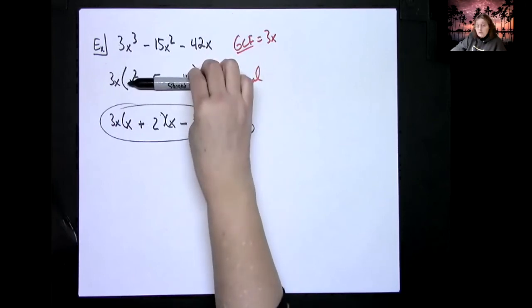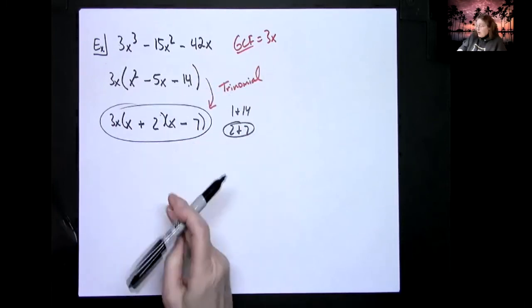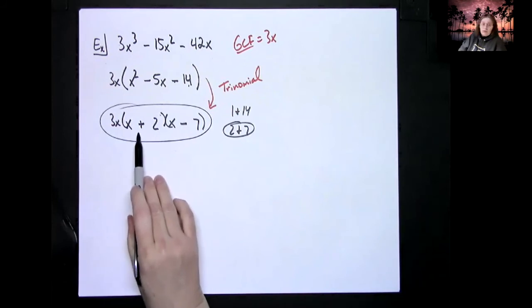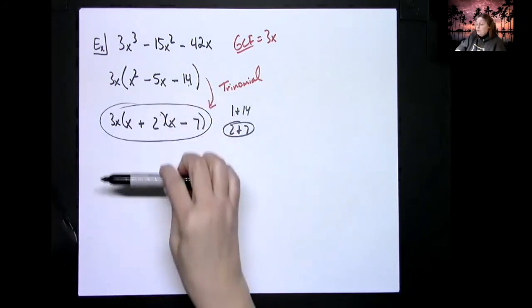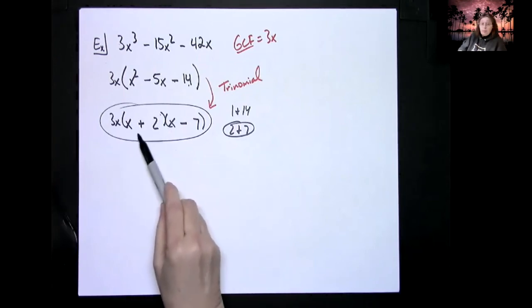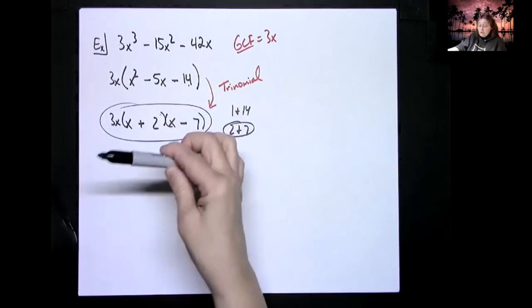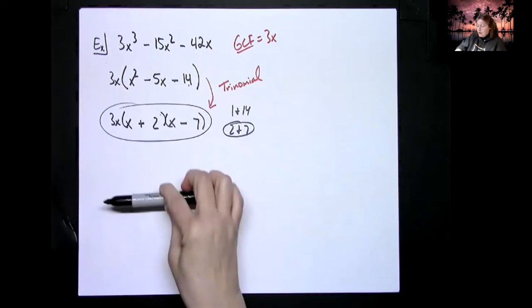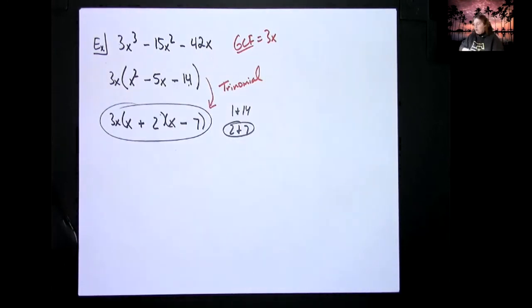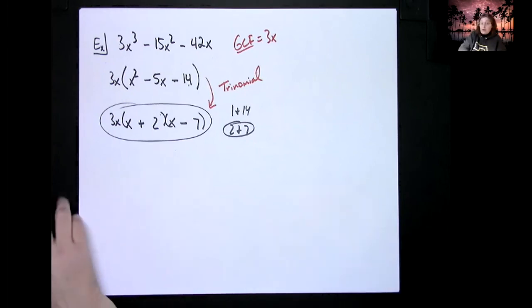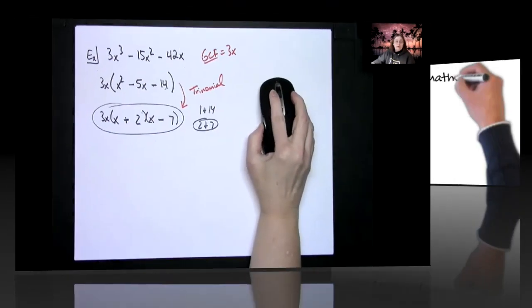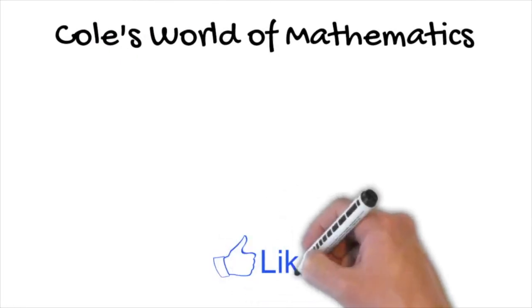Right now we're taking out greatest common factor and then factoring a trinomial because that's all we've learned, but we could take out a greatest common factor, a little bit later factor a trinomial, and then maybe one of these binomials might be the difference of two squares or one of them might be a perfect cube and a difference of two cubes or the sum of two cubes. This chapter will get intense as far as the factoring goes. Like right now it's like nothing compared to how far it will go.